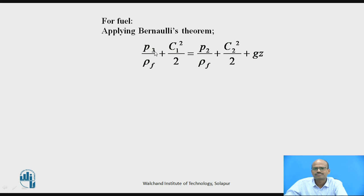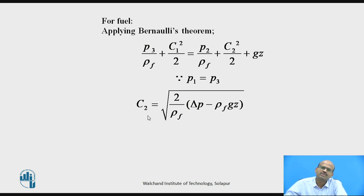As C1 is very very small can be neglected. Then P1 is also equal to P3. So this equation I can reduce for C2. Then we will get velocity of fuel injected at the throat is equal to square root of 2 by rho F in the bracket delta P minus rho F gz. What is the delta P? Delta P is the difference in the pressure, that is P1 minus P2. For delta P equals 0, mass of fuel injection is going to be 0. With decrease in P2, mass of fuel increases. Just keep in mind that point. So this is the velocity of fuel injected at the throat.